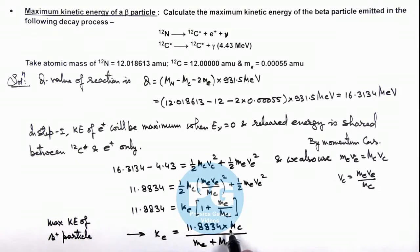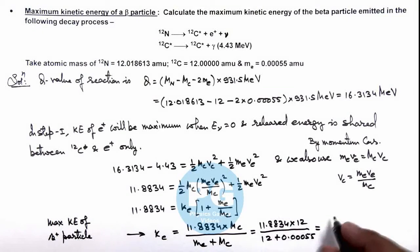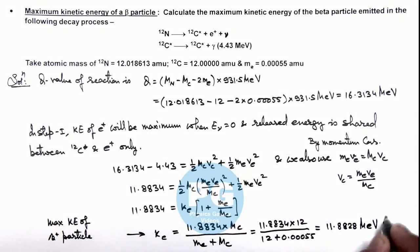Here we can substitute the value of mc and me as 11.8834 multiplied by 12 divided by 12 plus 0.000055. Numerically, if you simplify this, it gives you 11.8828 MeV. That is the result of this problem.